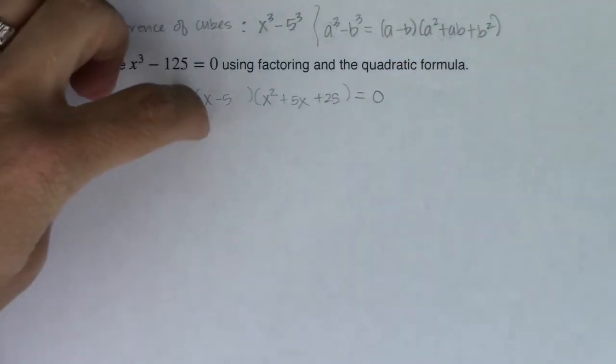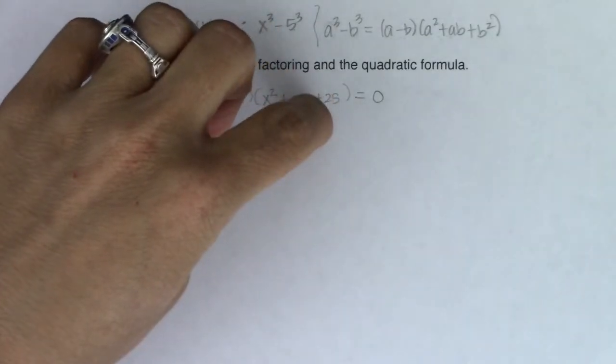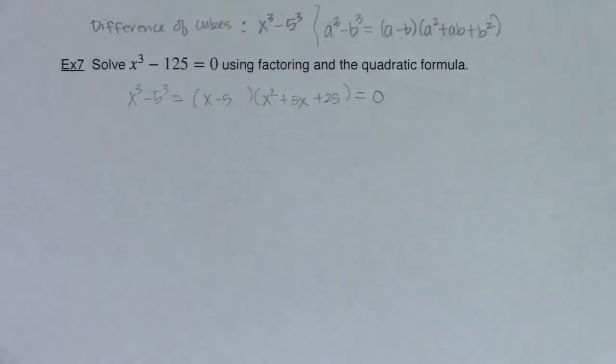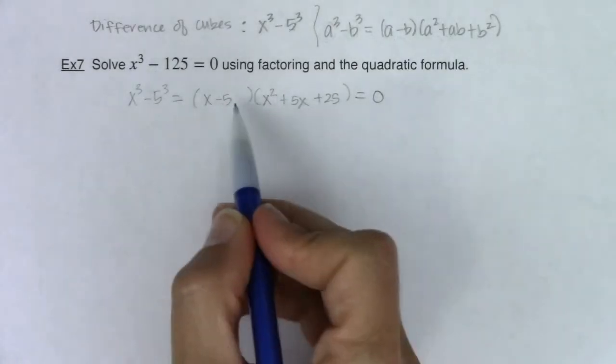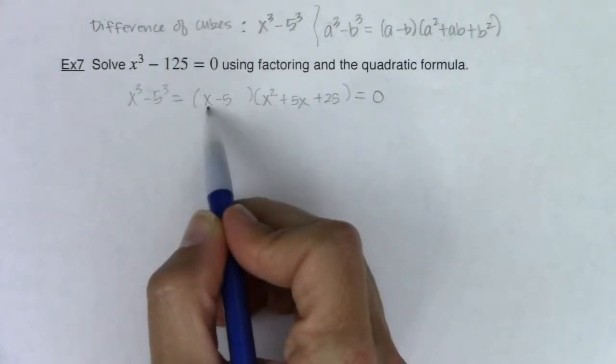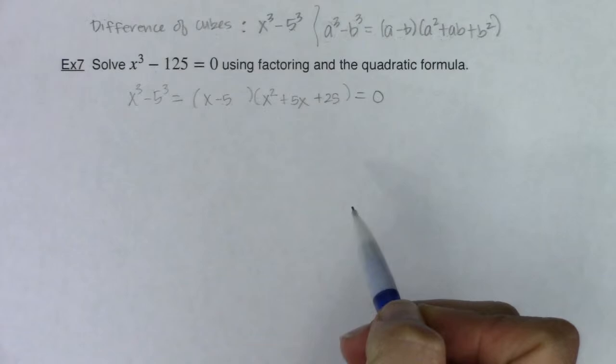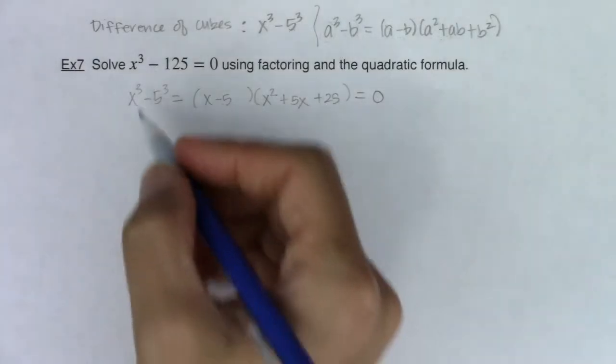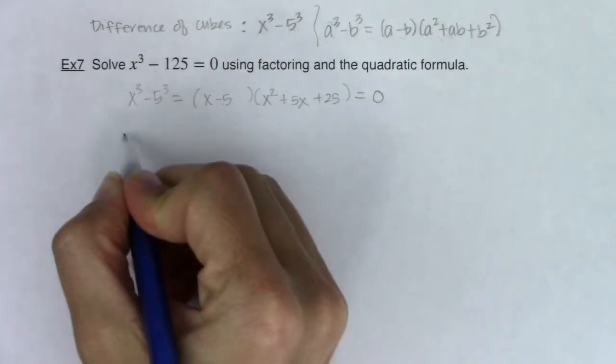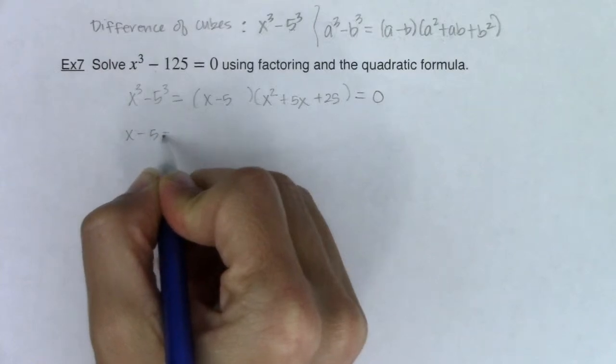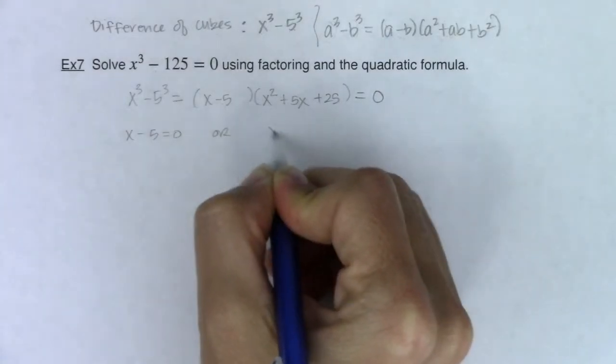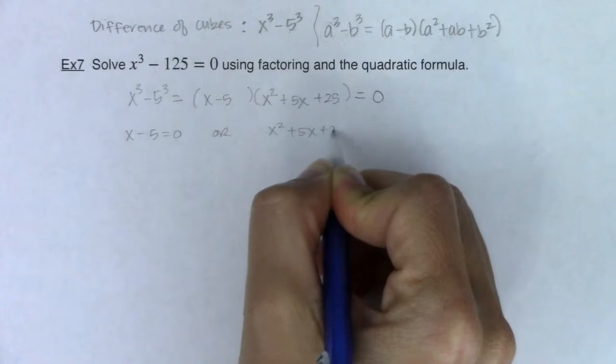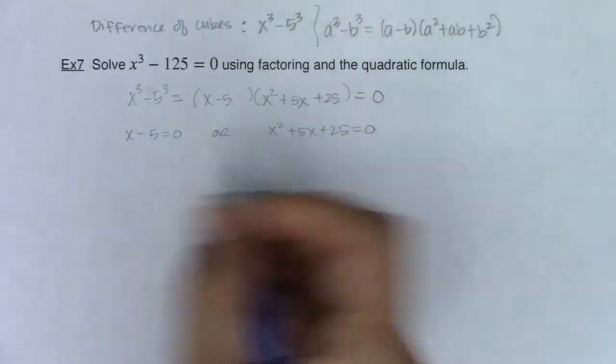And I have that is equal to 0. So I have my binomial multiplied to my trinomial, and that's going to equal 0. Now we know from the zero product property that either x minus 5 is equal to 0, or x squared plus 5x plus 25 is equal to 0. So this is going to break now into x minus 5 is equal to 0, or x squared plus 5x plus 25 is equal to 0.